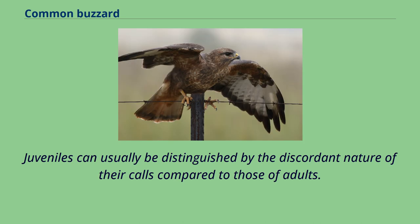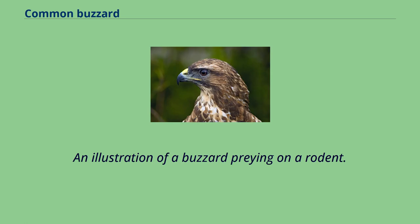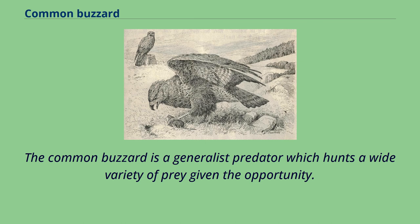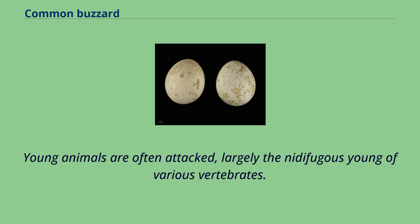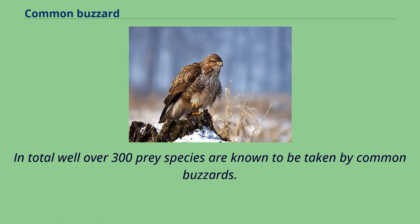The common buzzard is a generalist predator which hunts a wide variety of prey given the opportunity. Their prey spectrum extends to a wide variety of vertebrates including mammals, birds, reptiles, amphibians and, rarely, fish, as well as various invertebrates, mostly insects. Young animals are often attacked, largely the nidifugous young of various vertebrates. In total, well over 300 prey species are known to be taken by common buzzards. Prey size can vary from tiny beetles, caterpillars and ants to large adult grouse and rabbits up to nearly twice their body mass. At times, they will also subsist partially on carrion, usually of dead mammals or fish.